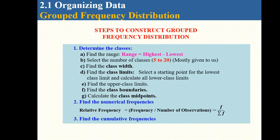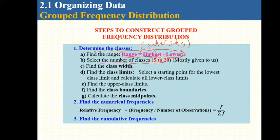When determining the classes, you find the range by looking at the lowest and highest values and taking the difference. Then you select the number of classes — generally 5 to 20, and this is mostly given to you. Then you find class width, class limits, class boundaries, and class midpoints. After that, you count frequencies, relative frequency, and cumulative frequencies.